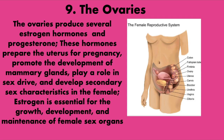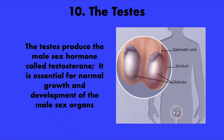Then we move into the two gonads of the female and male. We have the ovaries producing estrogen and progesterone, which prepare the uterus for pregnancy, as well as releasing prolactin. Estrogen is important for the growth and development of the female sex organs. Then we have the testes, which produce testosterone, essential for the normal growth and development of the male sex organs.